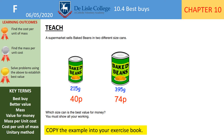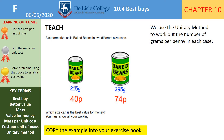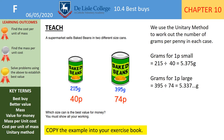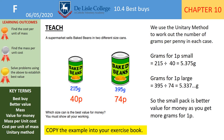This time we're going to work out the number of grams per penny. I always do it that way round because it's the bigger number divided by the smaller number, avoiding confusing small decimals. For the small tin: 215 divided by 40 is 5.375 grams per penny. For the large tin: 395 divided by 74 is 5.337 grams per penny. I would rather have more grams for one penny, so the small pack is better value.